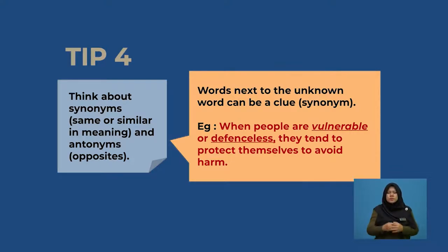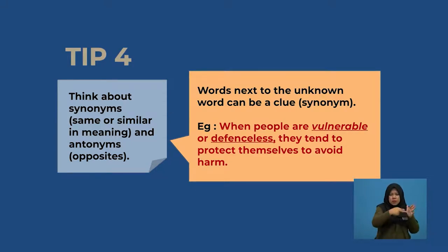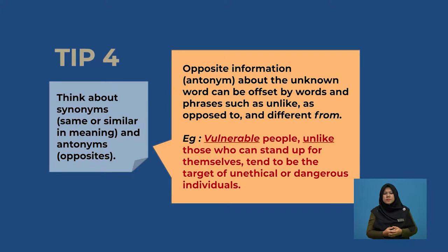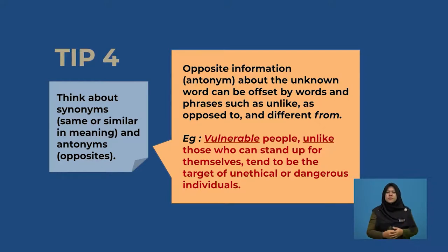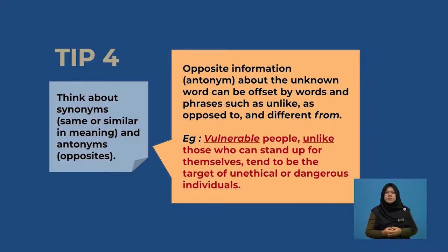For example: 'When people are vulnerable or defenceless, they tend to protect themselves to avoid harm.' Here, the synonym of the word 'vulnerable' is 'defenceless' and it helps you to understand the word better. Now let's look at antonyms. Opposite information about the unknown word can be offset by words and phrases such as 'unlike,' 'as opposed to' and 'different from.' For example: 'Vulnerable people, unlike those who can stand up for themselves, tend to be the target of unethical or dangerous individuals.' So here we get a clear understanding that vulnerable people are not people who can stand for themselves.